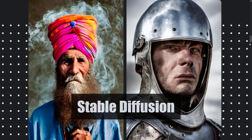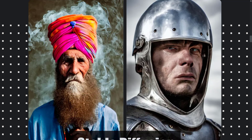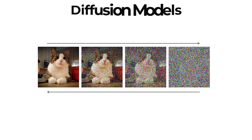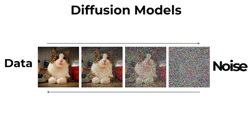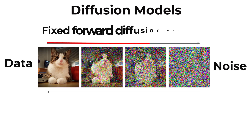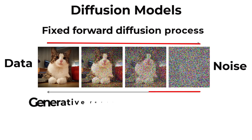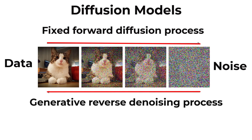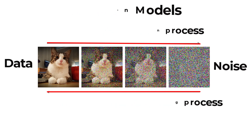Stable Diffusion is a latent diffusion model. Diffusion models are useful for tasks like improving image quality and creating new images. These tasks include denoising, in-painting, super-resolution, and image generation. For example, an image generation model would start with a random noise image, and the model is trained to reverse the diffusion process in natural images, enabling it to produce new natural images.